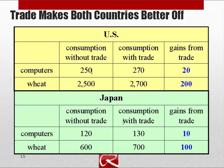Comparing consumption without trade and consumption with trade for both countries, we can see that each country is able to consume more of both goods than it could without trade, and therefore each country is better off than it otherwise would be.